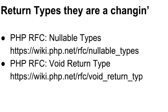Here are the two RFCs I've talked about: nullable types and void return types. Levi Morrison and Dimitri gave us nullable types. Andrea Falds gave us void return types. If you happen to run into them at a conference, please buy them a beer and tell them thank you. If you see them on Twitter, it'd be great to say thank you to them for all their hard work.